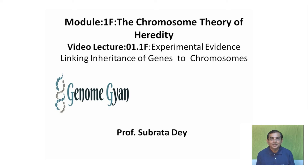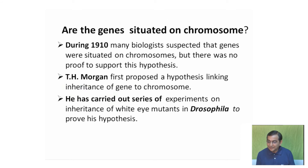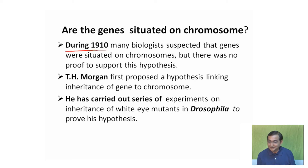In this module, I will discuss the chromosome theory of heredity. The first question is: are genes situated on chromosomes? During 1910, many biologists suspected that genes were situated on chromosomes, but there was no proof to support this hypothesis.